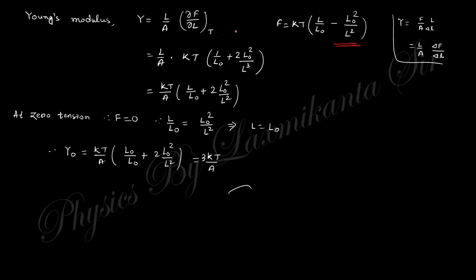If you differentiate with respect to l you get the Young's modulus expression. At zero tension (F = 0), putting this value gives l = l₀, and substituting l = l₀ yields the value Y₀. Moving on to the next question.